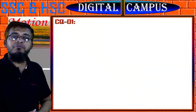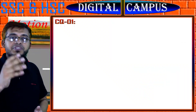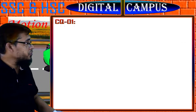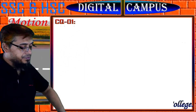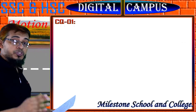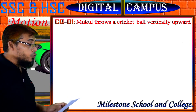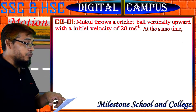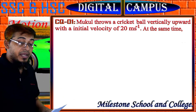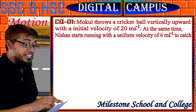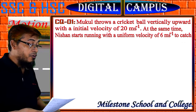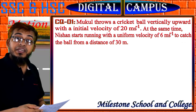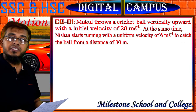Now I am solving the first creative question. It's from SelectBoard16. I am reading the question from here; we will collect the question from the screen. Creative question number 1: Mukul throws a cricket ball vertically upward with an initial velocity of 20 meter per second. At the same time, Nishan starts running with a uniform velocity of 6 meter per second to catch the ball from a distance of 30 meter.